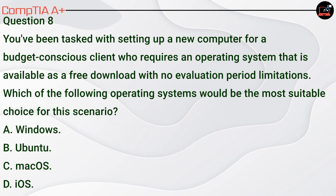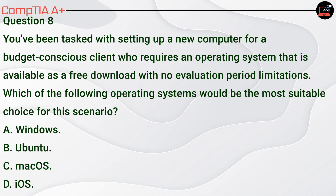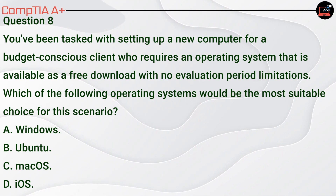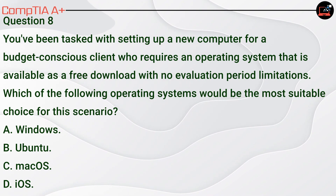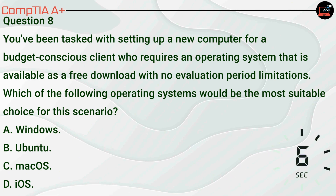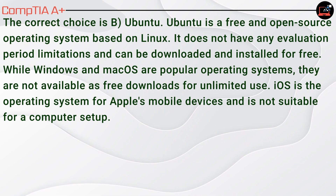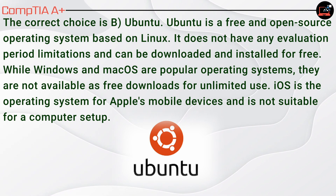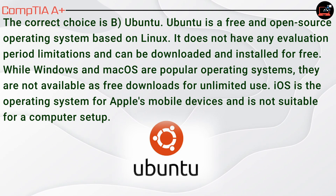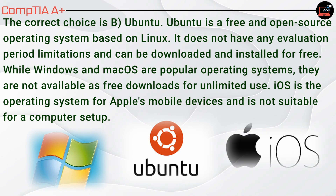Question 8. You've been tasked with setting up a new computer for a budget-conscious client who requires an operating system that is available as a free download with no evaluation period limitations. Which of the following operating systems would be the most suitable choice? A, Windows. B, Ubuntu. C, Mac OS. D, iOS. The correct choice is B, Ubuntu. Ubuntu is a free and open source operating system based on Linux with no evaluation period limitations. Windows and Mac OS are not available as free downloads for unlimited use. iOS is the operating system for Apple's mobile devices and is not suitable for a computer setup.